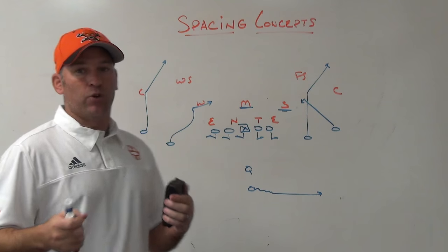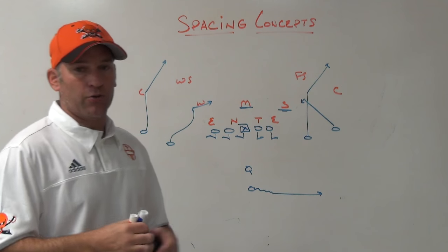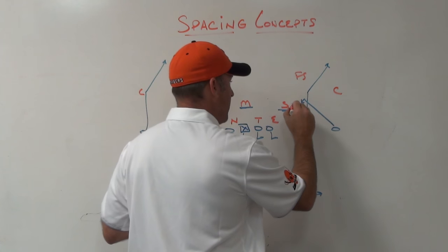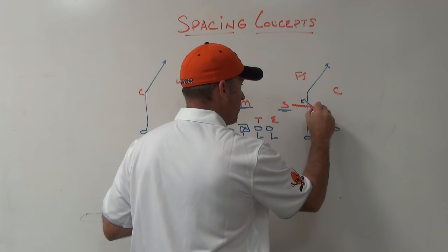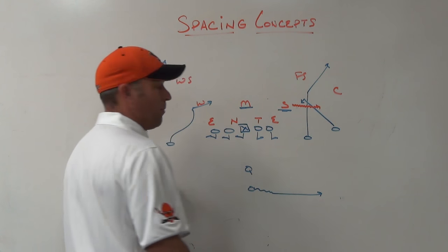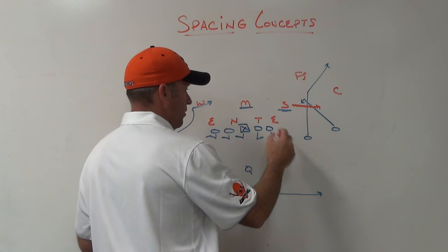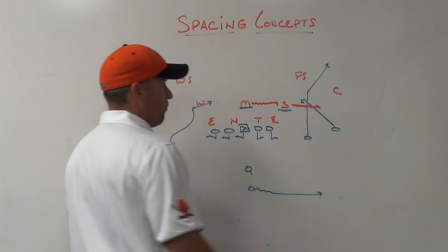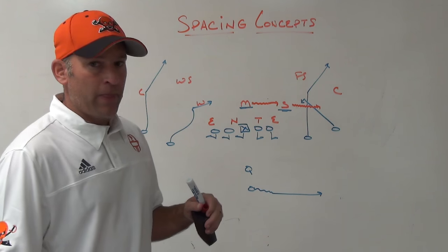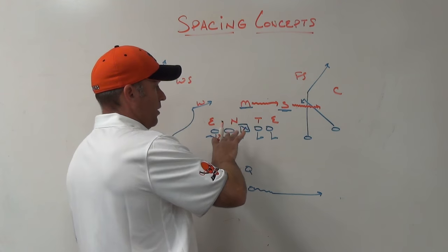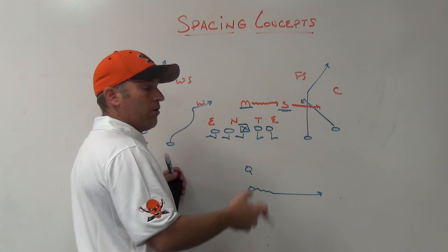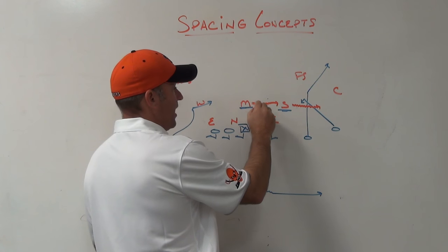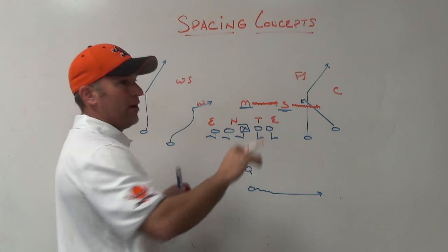When you understand how teams are going to play defense and pattern match, what ends up happening is the good defenses start to expand with the width of the tailback. When the tailback pushes, the good Mike linebackers understand their drop now pushes too. The good Mike linebackers — unless you can run QB draw at them enough or have other things to take advantage of inside the box — are going to find that new number three and drop to get underneath that snag.